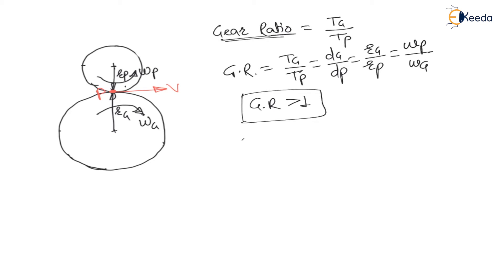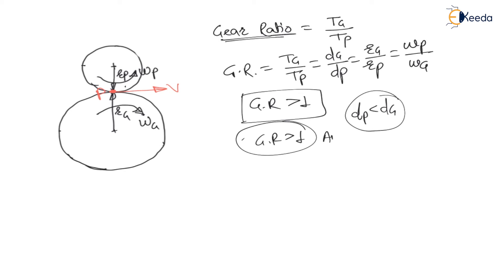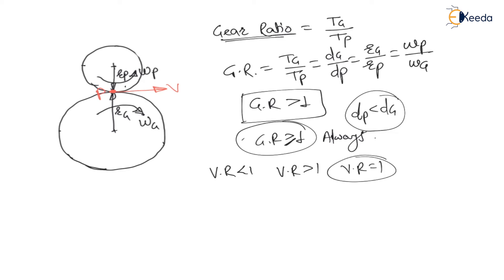Since the pinion is smaller, the diameter of the pinion is always less than the diameter of the gear. Therefore, gear ratio is always greater than 1 — this is a must condition. However, velocity ratio can be less than 1, greater than 1, or equal to 1 depending on who is driver and who is driven. But gear ratio is always greater than or equal to 1. For velocity ratio, it is angular velocity of driver divided by angular velocity of driven.